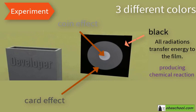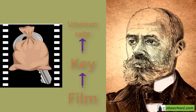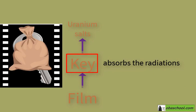This is exactly what happened when Henry Becquerel had a key on top of the photographic film, and on top of this key, uranium salt. The key absorbed the radiation emitted by the uranium salt and developed a photo of the key on his photographic film.